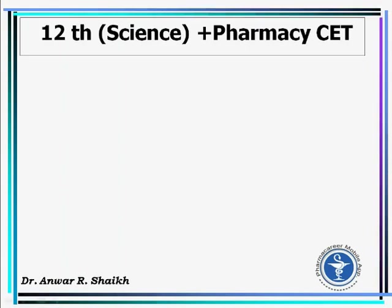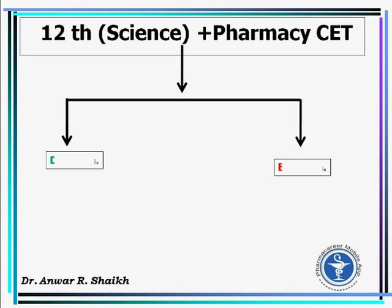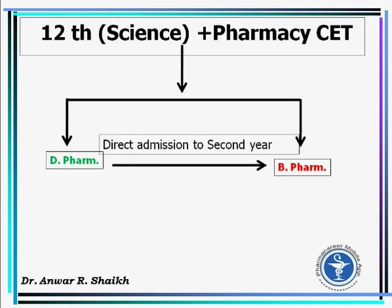To enter this field, you should have a 12 Science background plus a non-zero Pharmacy CET score. There are two types of courses after 12 Science: Diploma in Pharmacy (D-Pharm) and Bachelor of Pharmacy (B-Pharm). D-Pharm is 2 years and B-Pharm is 4 years. You can also opt for B-Pharm after D-Pharm with direct admission to the 2nd year.